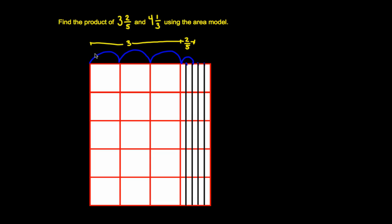Now I'm going to go down for 4 and 1 third — 4 wholes and 1 third of another whole. So 1 whole, 2 wholes, 3 wholes, 4 wholes, and 1 third of another whole. So I'm going to break this whole into 3 equal parts, and I only want 1 of those thirds.